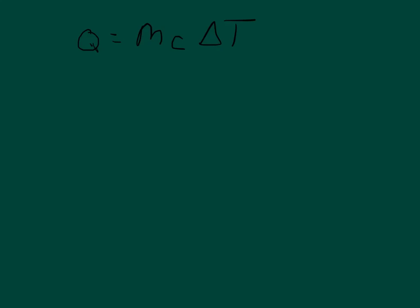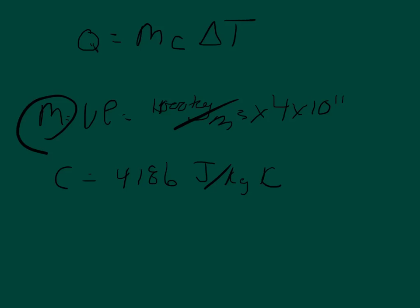The problem doesn't give us the mass of Lake Erie, it gives us the volume. Mass equals volume times density. The density of water is 1000 kilograms per cubic meter. When we multiply that by the volume, 4 times 10 to the 11th, that gives us the mass. The specific heat capacity is 4,186 joules per kilogram Celsius. The change of temperature is from 11 to 14 degrees, so that's 3 degrees Celsius.